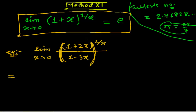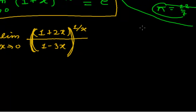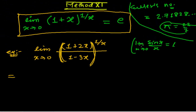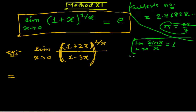We have to convert this all into the standard form — just as we used to do in trigonometric functions, converting into the sin(x)/x = 1 form when the limit x tends to 0. Here we have to convert everything into that standard form.